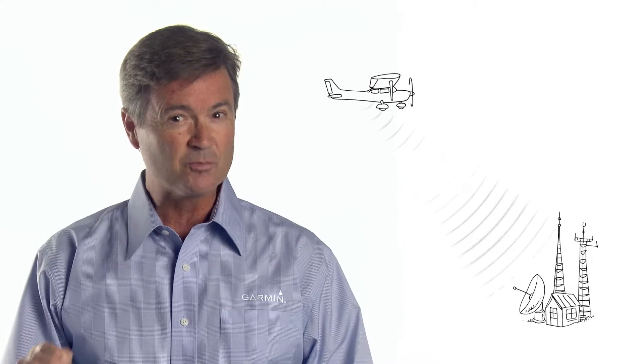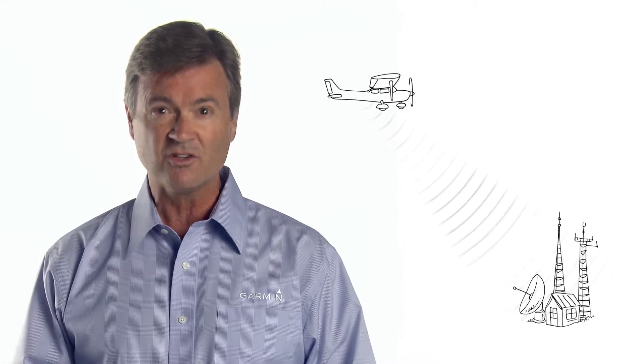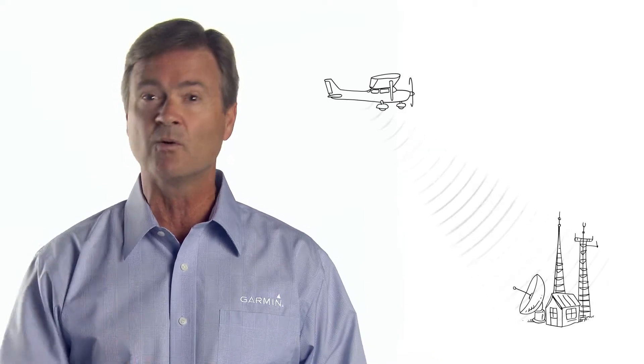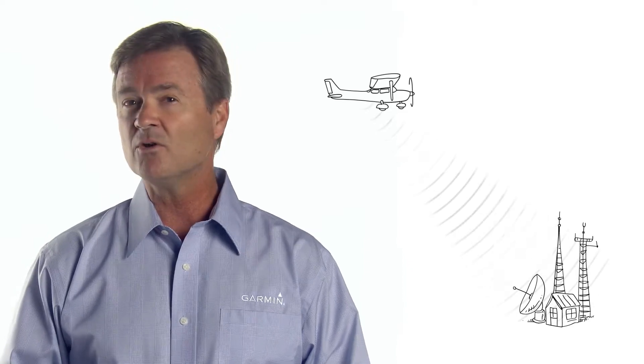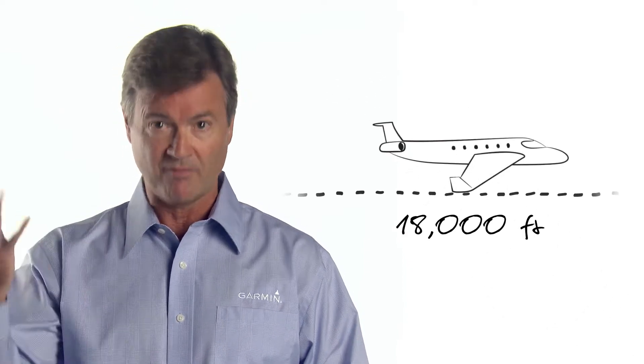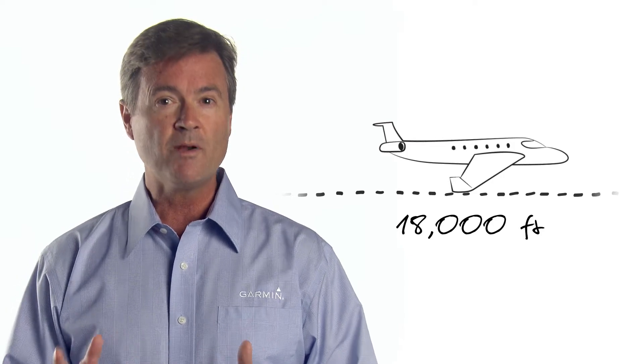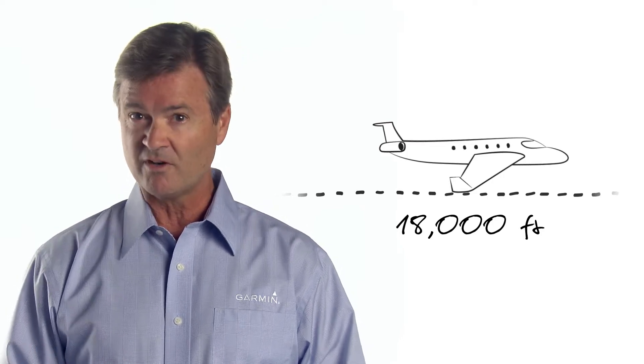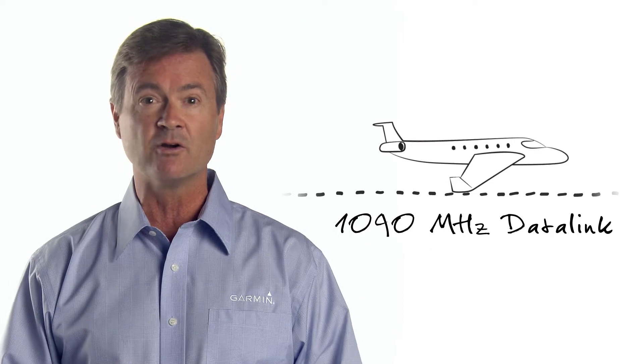You'll also need an ADS-B out solution that transmits this position information to ADS-B ground stations. For those of you who fly outside of the U.S. or within Class A airspace above 18,000 feet, you'll be required to broadcast this position information over the 1090MHz data link.